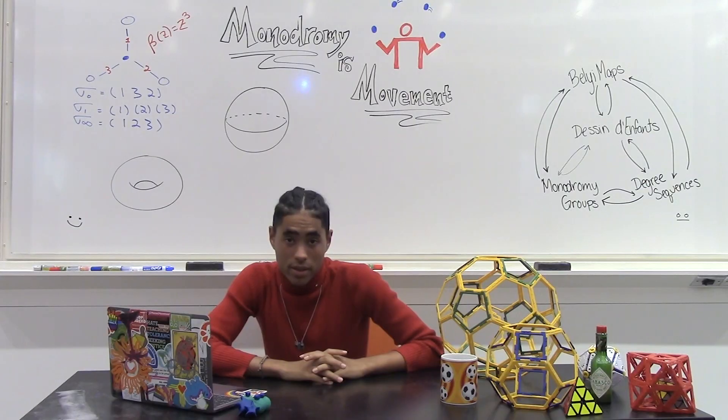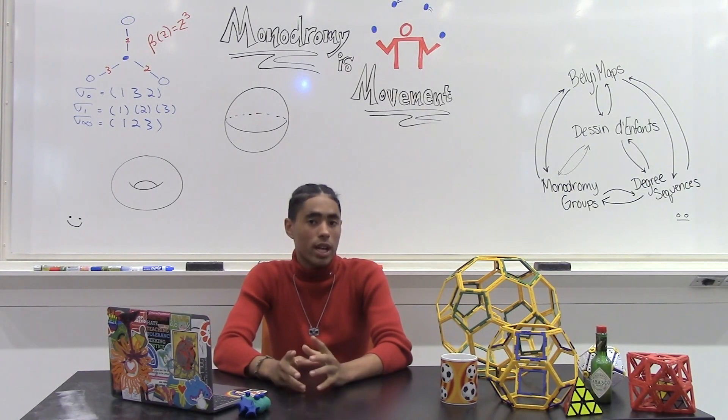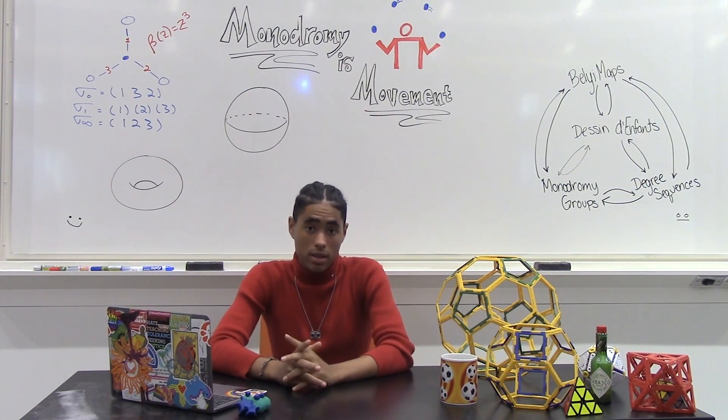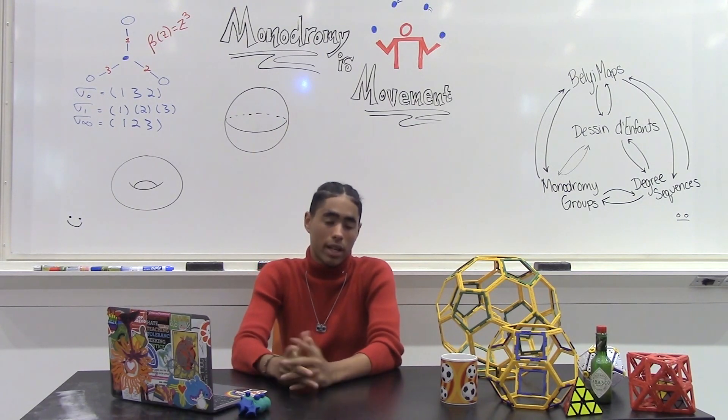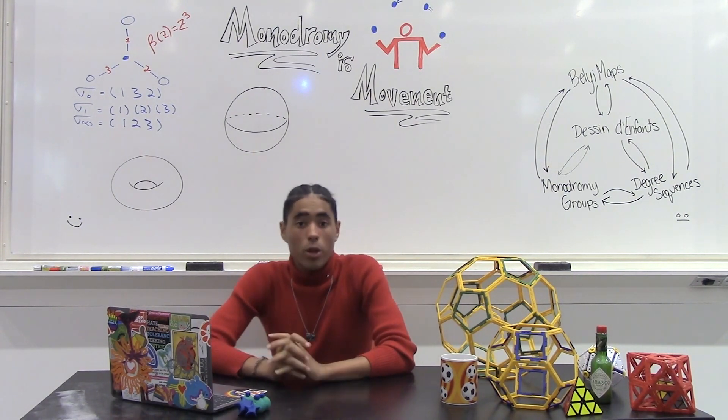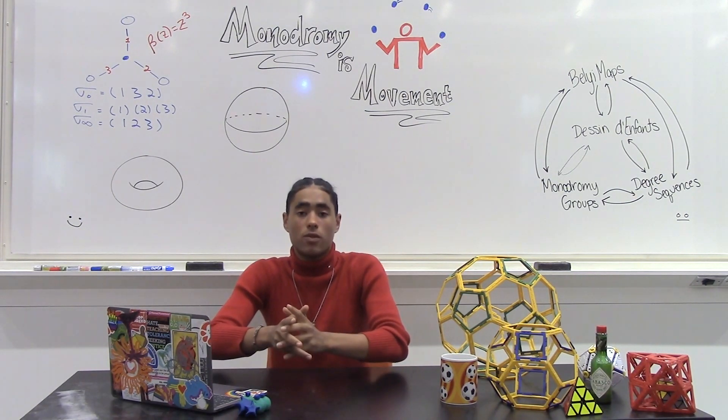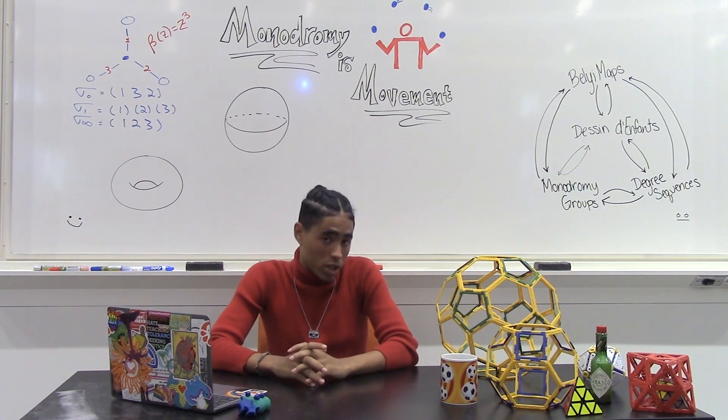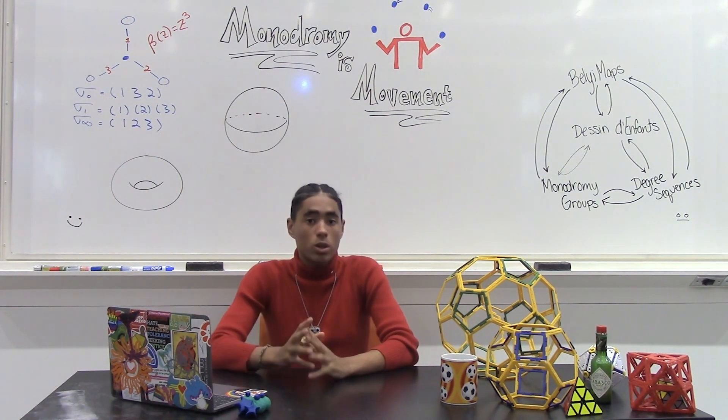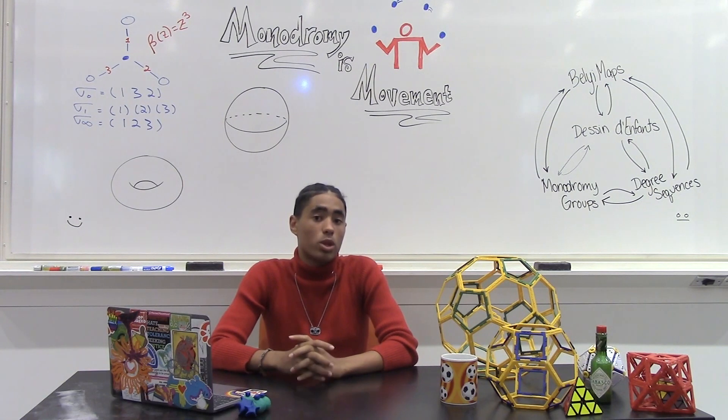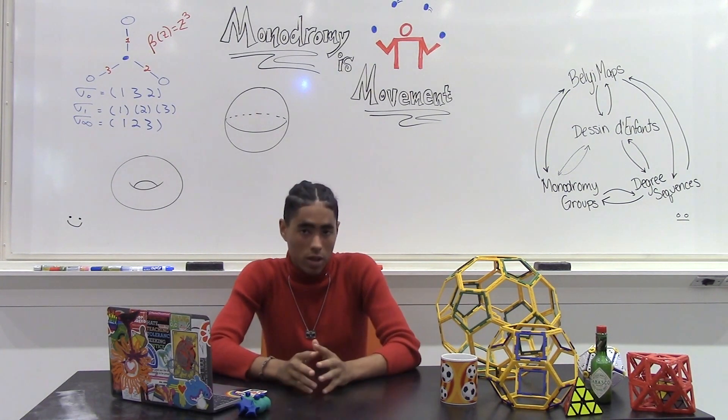We want to visualize our Dessin on the sphere to better understand and study them. Some of our Dessin can be directly plotted under the sphere, like our soccer ball, whereas others need to be projected onto the sphere using stereographic projection. I'm going to pass it to Kendall to explain what it means to project a Dessin from the complex plane onto the sphere.